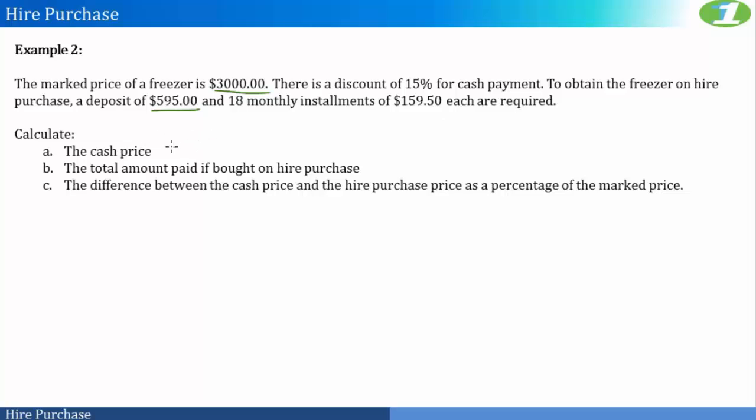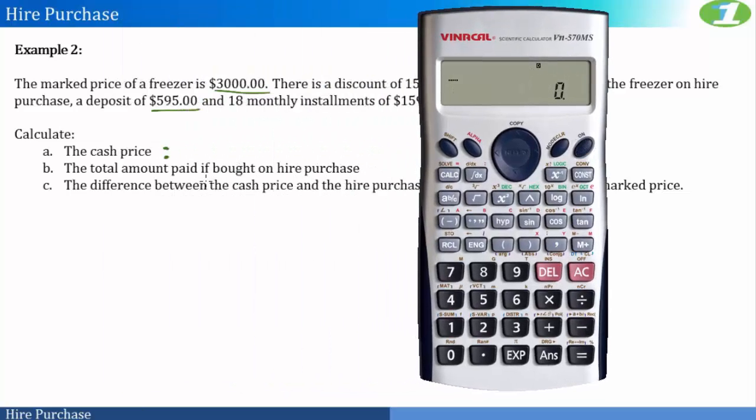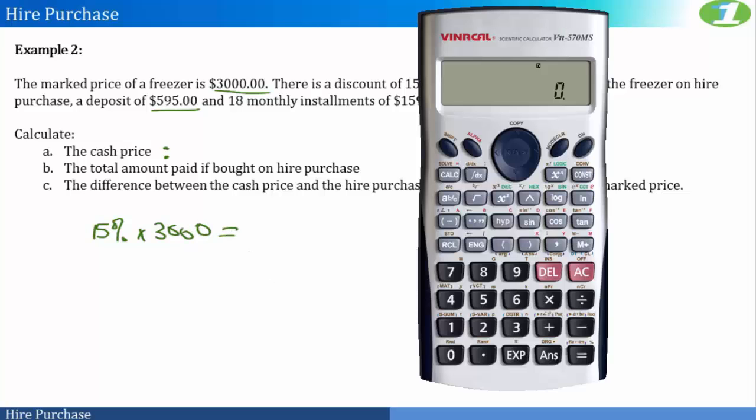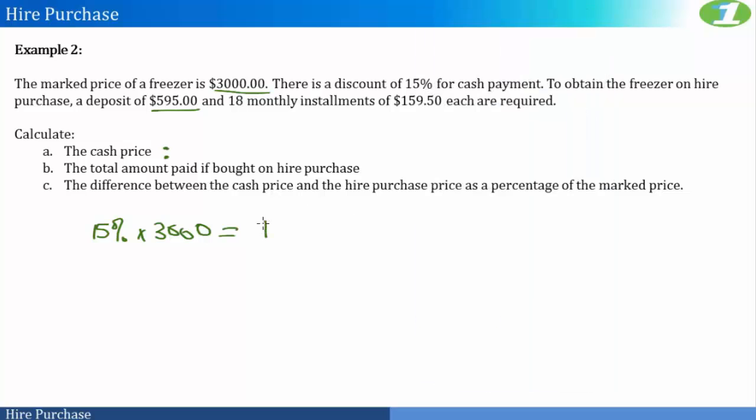So let's look at the price under both scenarios. If I were to work out 15% of $3,000, then I would have paid $2,550. So the cash price for this item is actually $2,550. So if I paid using cash, then I would certainly pay less, given that I would have gotten a discount of 15%.